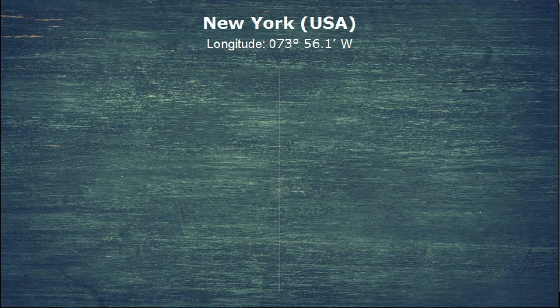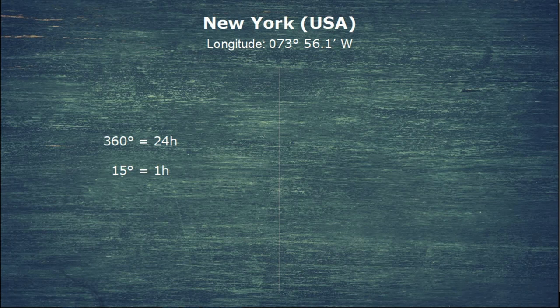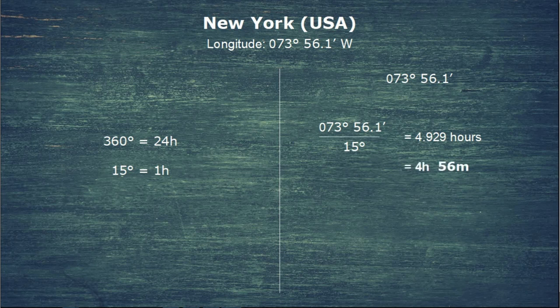To find out exactly how much later: the Earth spins a full 360 degrees in 24 hours. Dividing down, the Earth spins 15 degrees every hour. For our true time difference, we work out how long it takes the Earth to spin 73° 56.1'. We take that longitude and divide by 15 degrees to get 4.929 hours, which in real terms is 4 hours 56 minutes. So the true time difference between Greenwich and our longitude is 4 hours 56 minutes — later, because we're west.